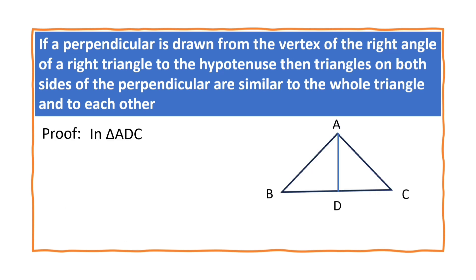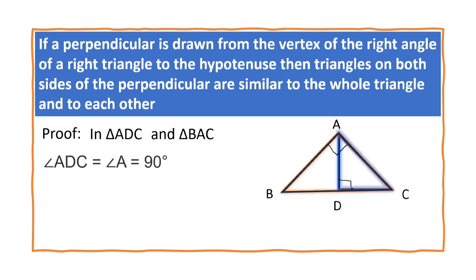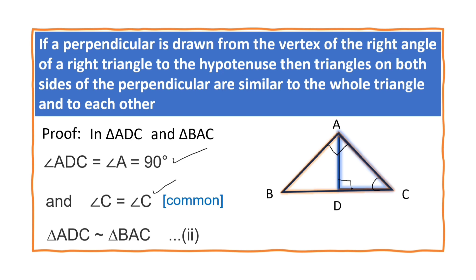Now, in triangle ADC and triangle BAC — angle ADC is 90 degrees, and angle A is 90 degrees, which is given. Angle C is common: angle ACD equals angle ACB. So by the angle-angle criterion, triangle ADC is similar to triangle BAC. The second one is proved.